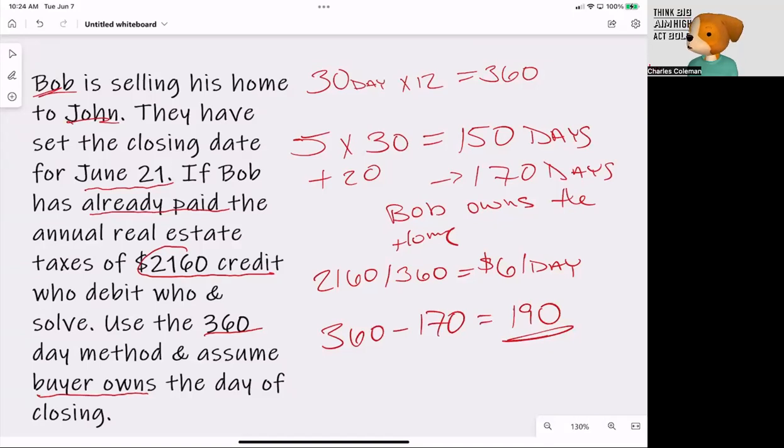So the very next thing that we're going to do is we're going to take that 190 days. And we're going to multiply that by the $6 per day. So we go six times 190 is $1,140.